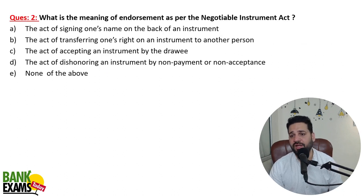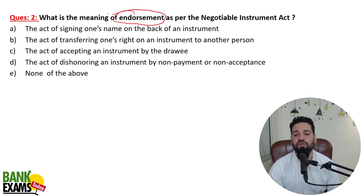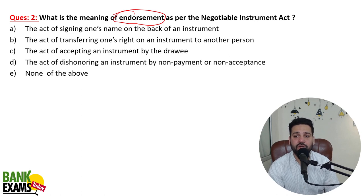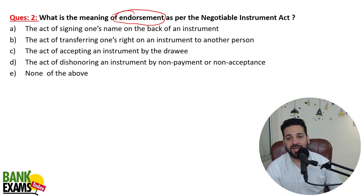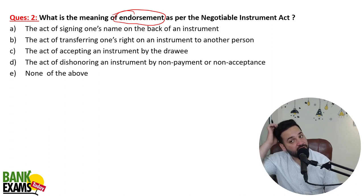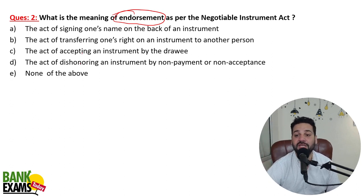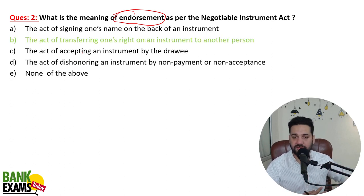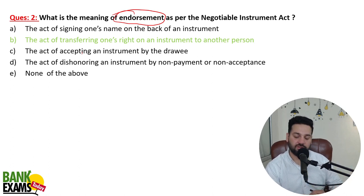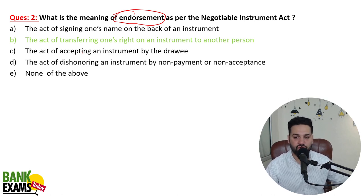What is the meaning of endorsement as per the Negotiable Instruments Act? The act of signing one's name on the back of an instrument, and transferring one's right on the instrument to another person — that is the meaning of endorsement. Endorsement basically means transferring one's right to another person. If you have a cheque and you give it to someone else by signing it, that is endorsement.